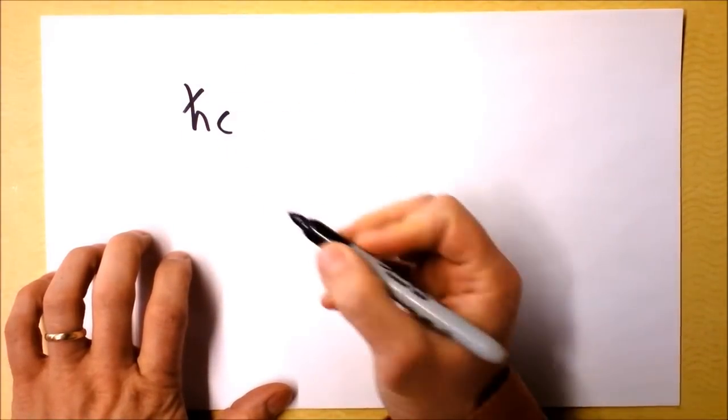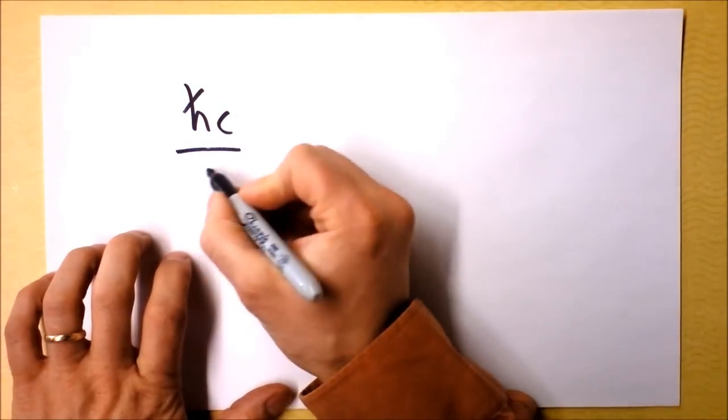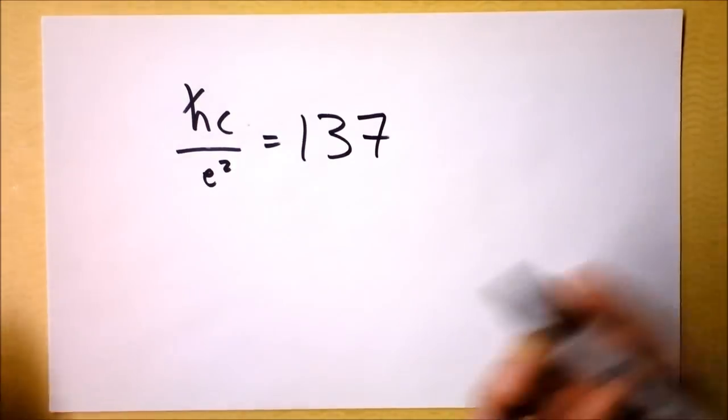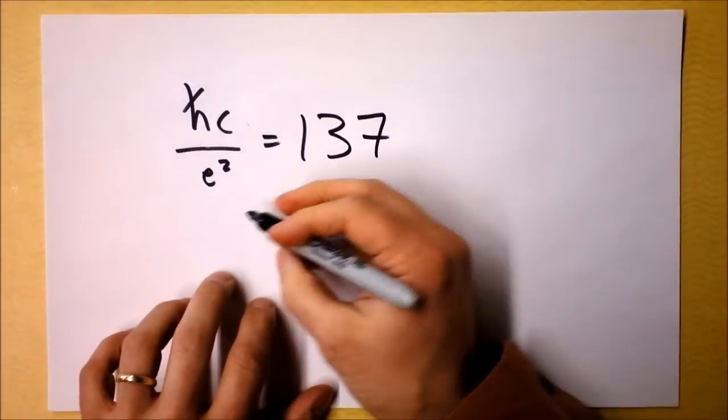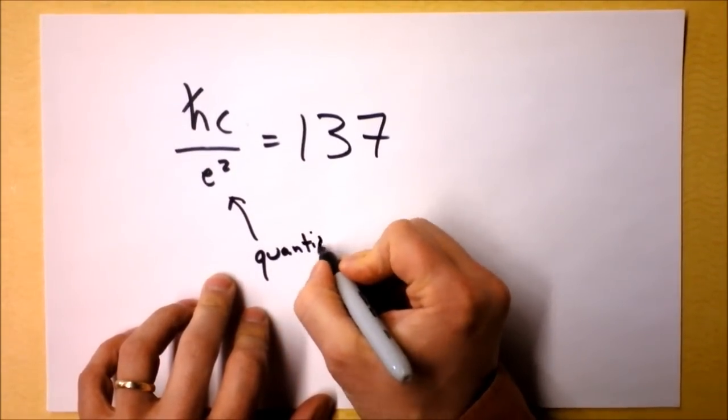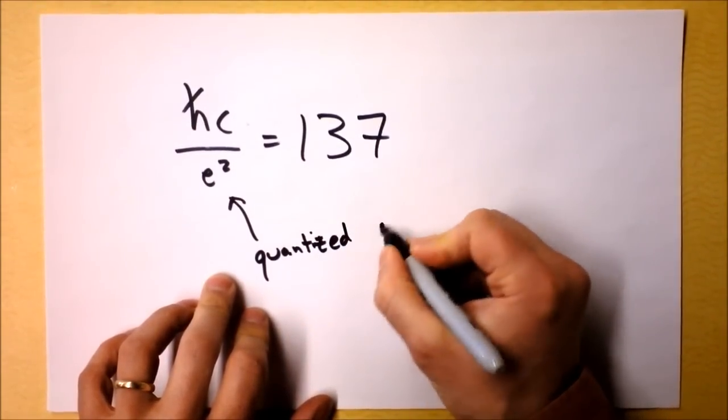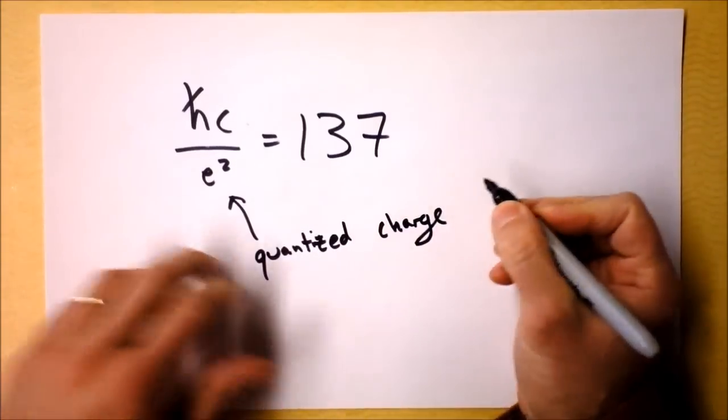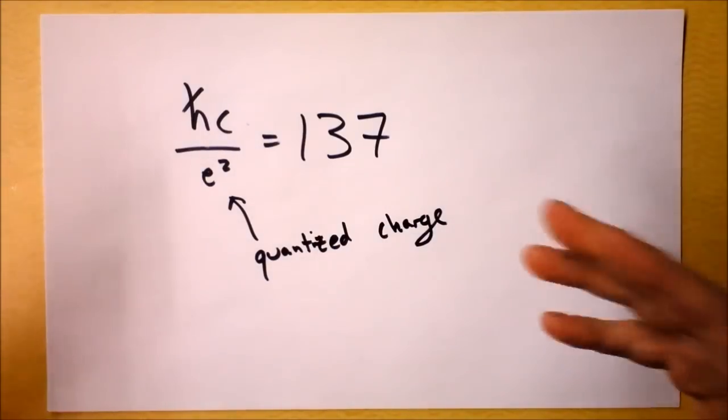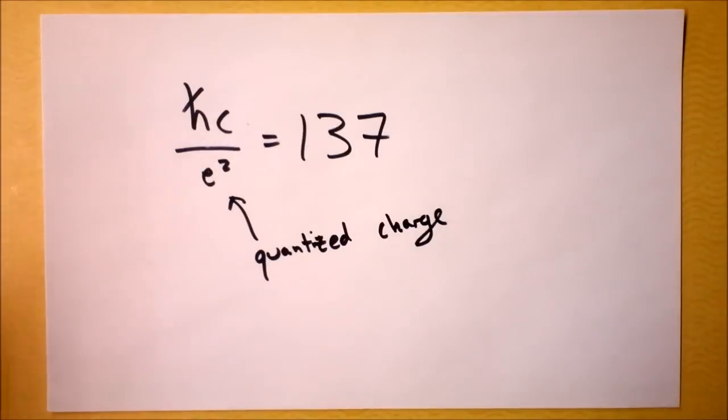He says h-bar, which is Planck's constant, divided by 2π times the speed of light over e squared is 137, has something to do with alpha, right? But he's saying that is quantized charge. He says that's what we know already. We've got quantized charge by that relationship right there. And here he sets out to associate that with magnetic monopoles, the presence of them.